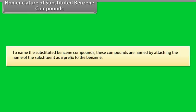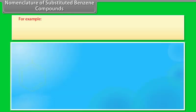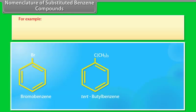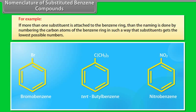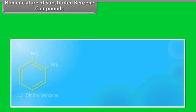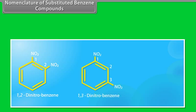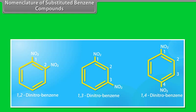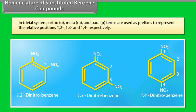To name substituted benzene compounds, the name of the substituent is attached as a prefix to benzene. For example, bromobenzene, tert-butylbenzene, nitrobenzene. If more than one substituent is attached to the benzene ring, numbering of carbon atoms is done so that substituents get the lowest possible numbers. For example, 1,2-dinitrobenzene; 1,3-dinitrobenzene; 1,4-dinitrobenzene.